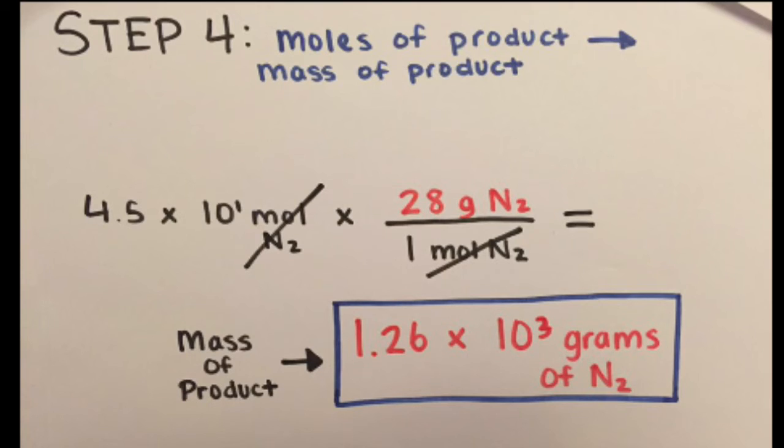That's 2 nitrogen, so it is 28 grams. The 1 mole of N2 will go into the denominator because we want to cancel out that unit, and 28 grams of N2 will remain in the numerator. Using math again, we cancel out moles of N2, multiply 4.5 times 10 to the first power by 28, and divide by 1.